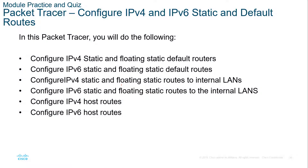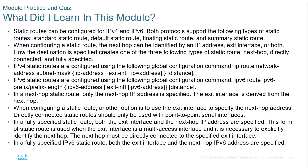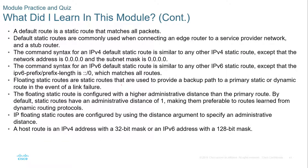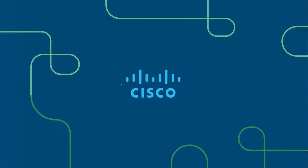We have labs covering configuring static routes and host routes for both IPv4 and IPv6, as well as labs verifying our configuration. We learned how to set up static routes and the four main types, how to set up a default static route and a host static route, and the different rules for controlling traffic for both IPv4 and IPv6. That is it for this lecture — if you have questions or concerns, please feel free to reach out.